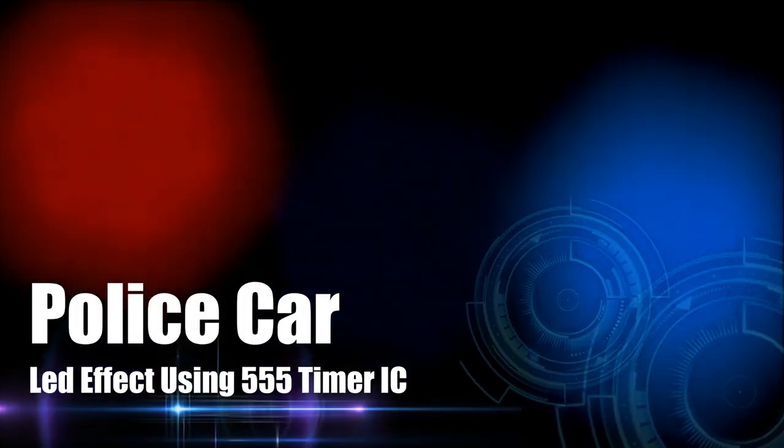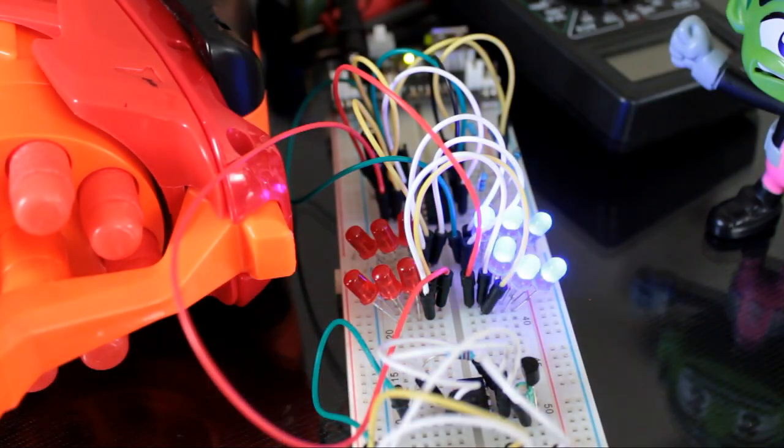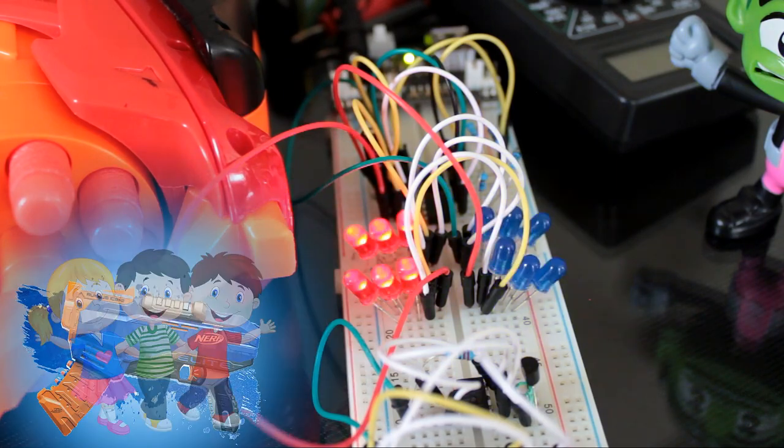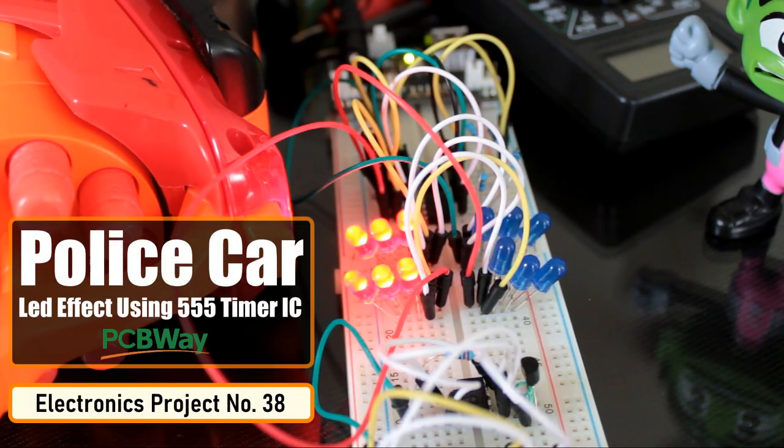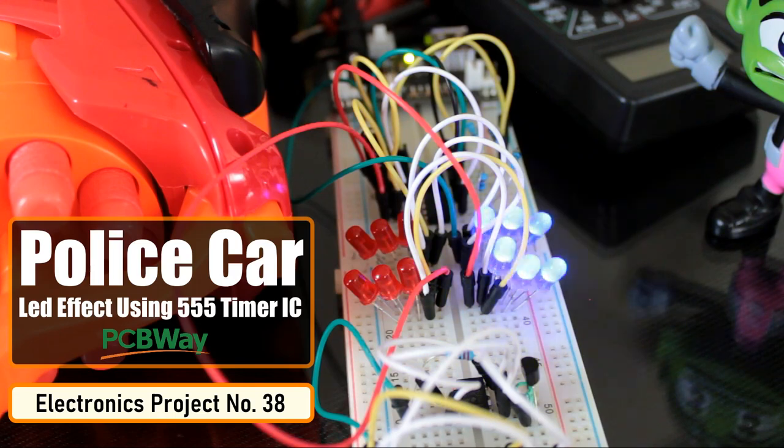My five-year-old son asked me to create a police car-like flashing light that he can put on top of his Nerf gun while playing around with his mates. No worries mate, sounds like a plan to me. Bang, we can sort it.